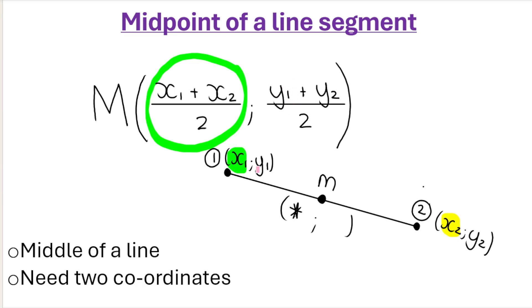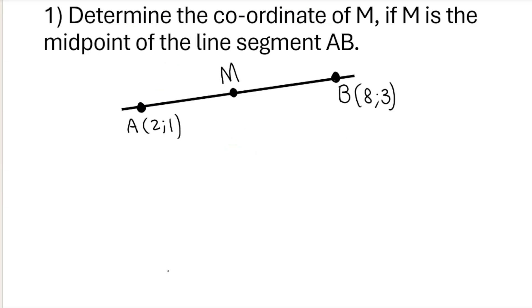that gets me this part of the midpoint's coordinate. And then y1, which would be this, plus y2, which would be this, divided by 2, that would get me this part of the coordinate. So basically it's helping me find a coordinate. So if I had to do this as an example, determine the coordinate of M if M is the midpoint of the line segment AB.